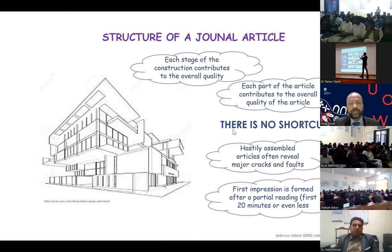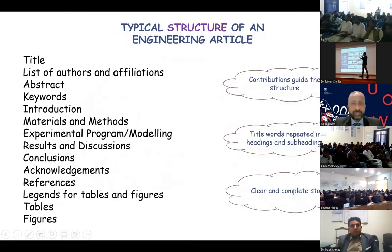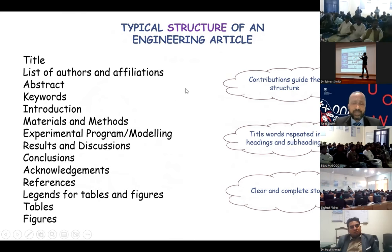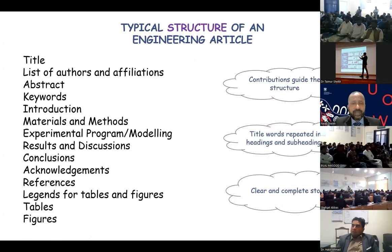A typical structure of an engineering article includes: title, list of authors and affiliations, abstract, keywords, introduction, materials and methods or experimental program, modeling technique for analytical/numerical articles, results and discussion, conclusions, acknowledgements, references, legends for tables and figures, tables, and figures. This list of sections is guided by the contribution, and title words are repeated in headings and subheadings.